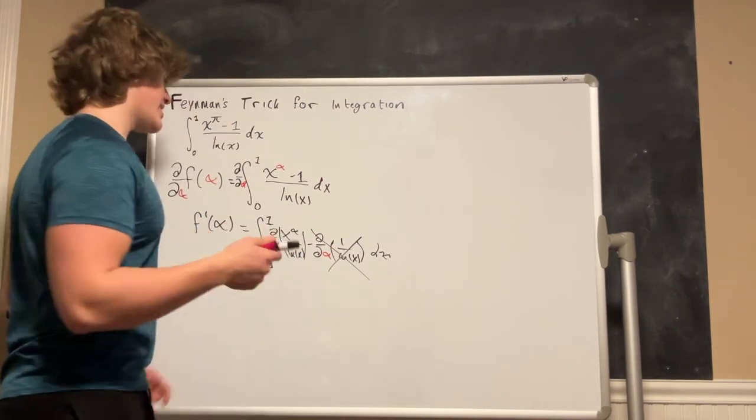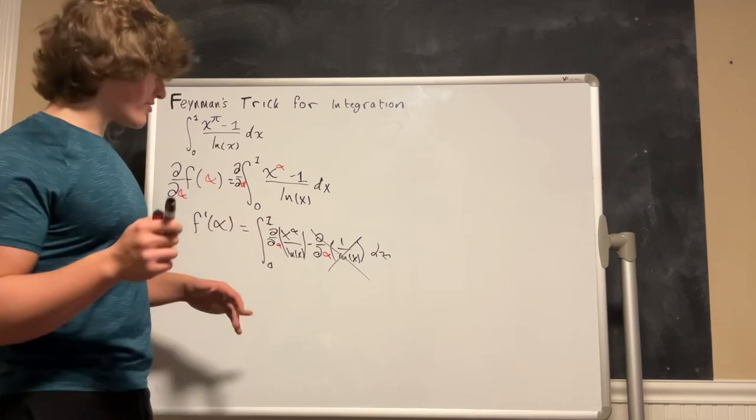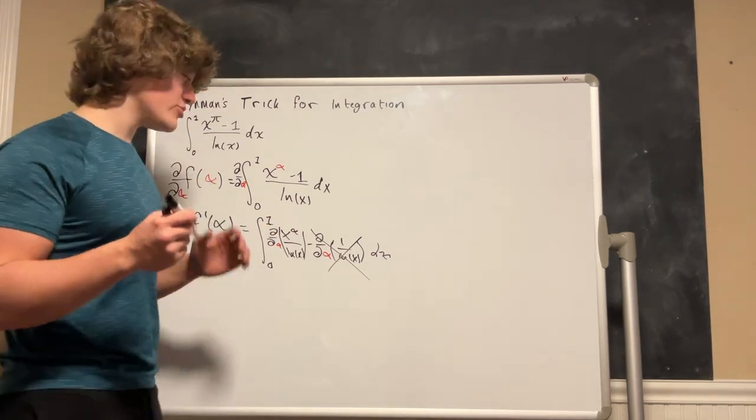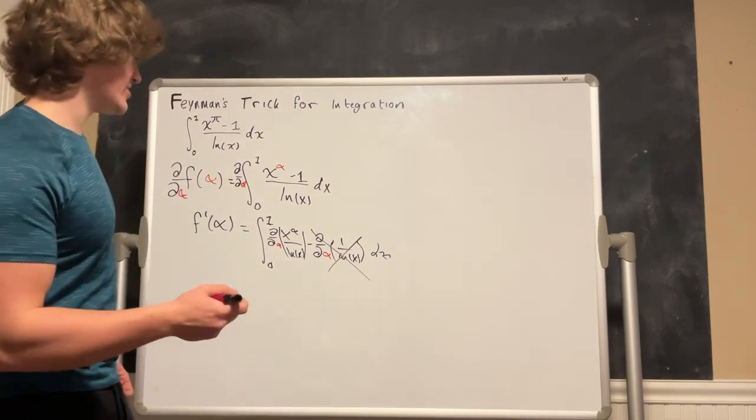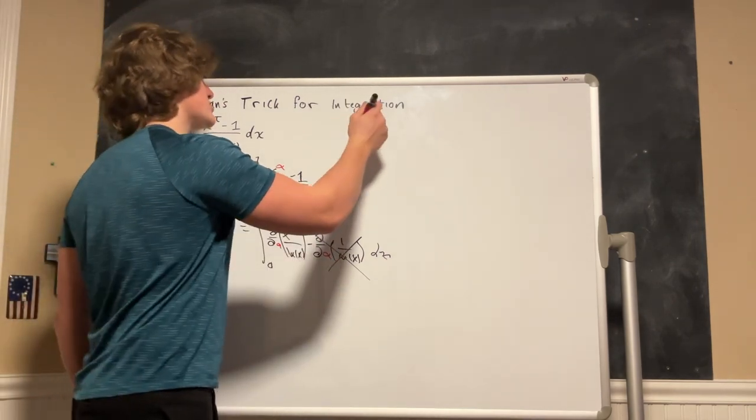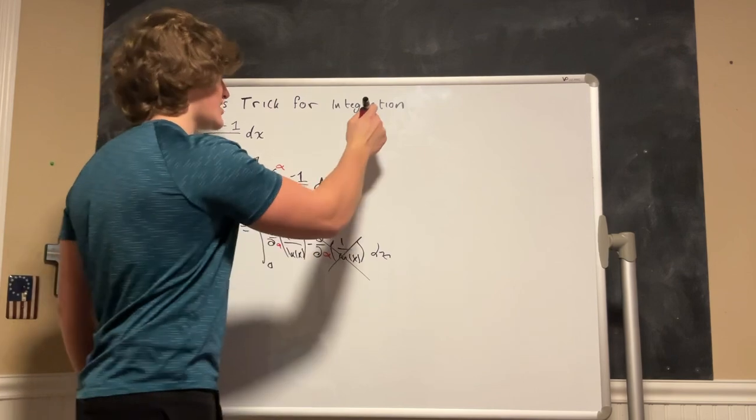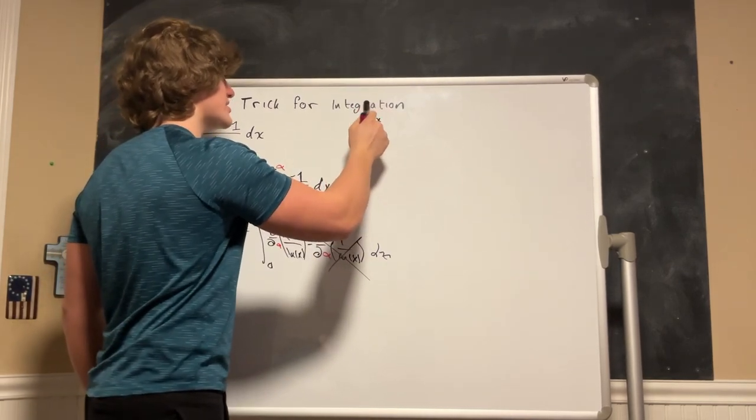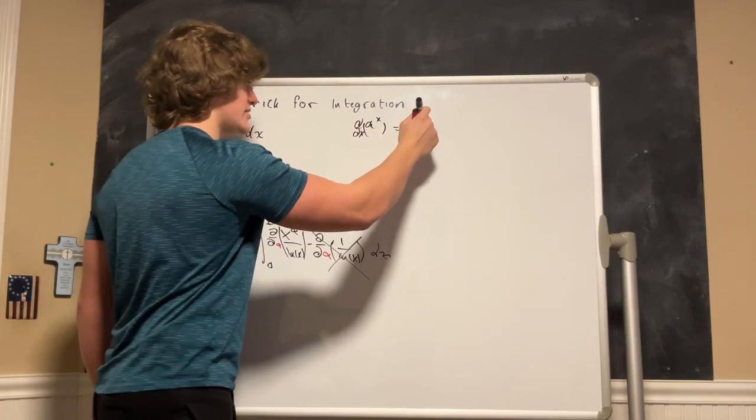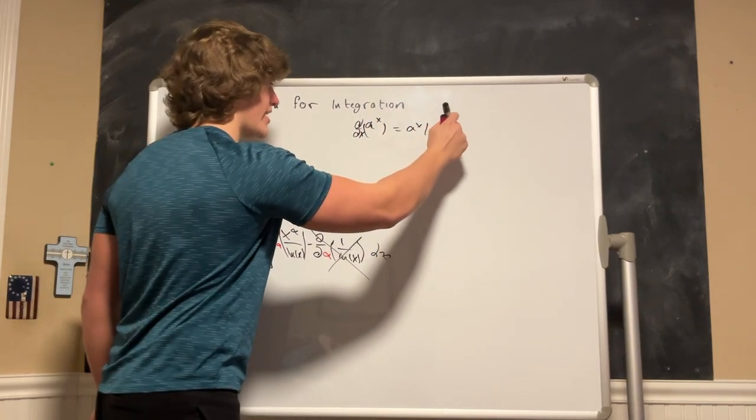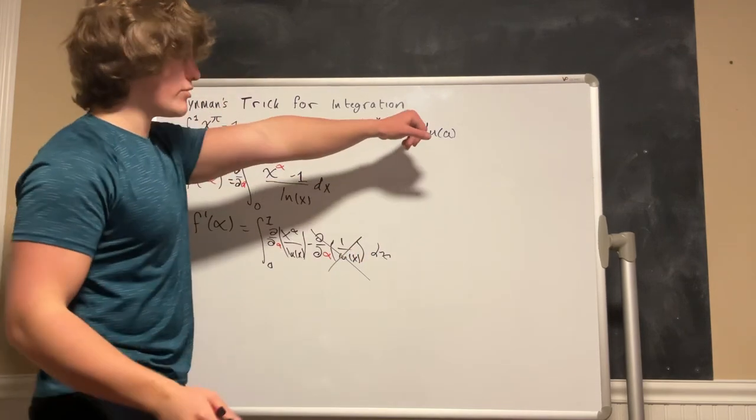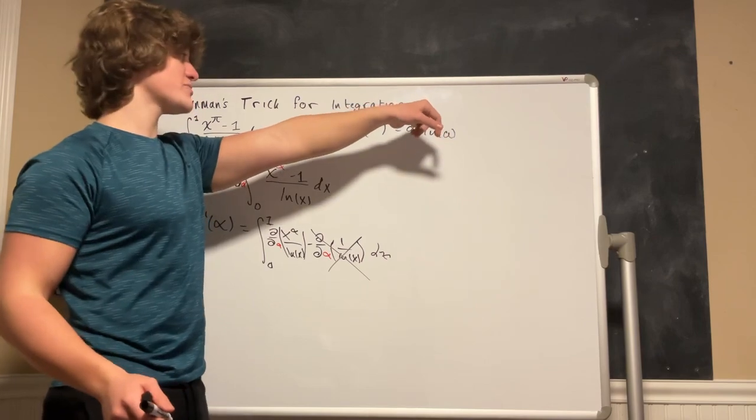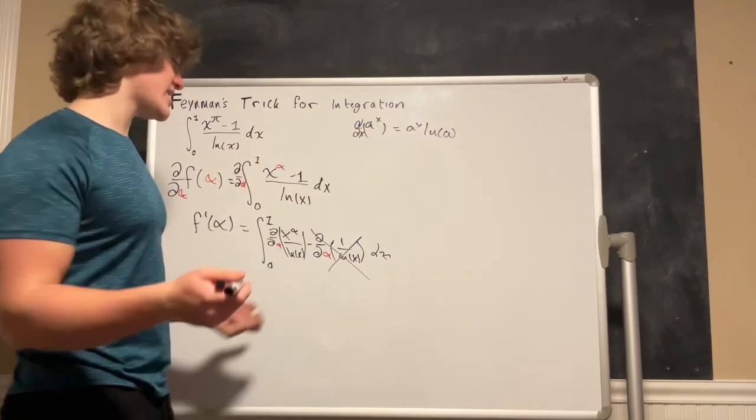Now this on the other hand is actually a very strange derivative that you don't see too often in your AP calculus classes that you take in high school and this is just the derivative of something that is not e raised to the x. The derivative of this with respect to x is just a to the x times the natural log of a. Now in this case our alpha is what we are differentiating with respect to and that is in our exponent and our a is actually just our x.